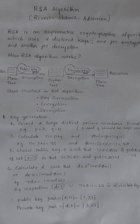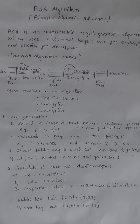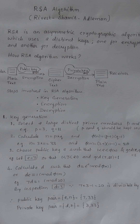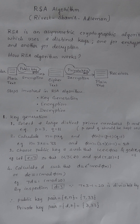Today we explore the RSA algorithm, developed by Rivest, Shamir and Adleman. It is a kind of asymmetric key encryption algorithm which uses two distinct keys — one key is used for encryption and another key is used for decryption. We'll see how RSA algorithm works in the background.